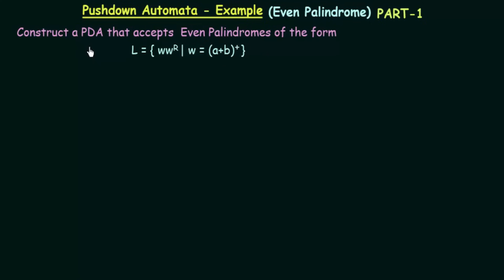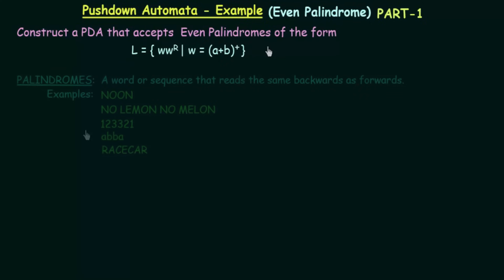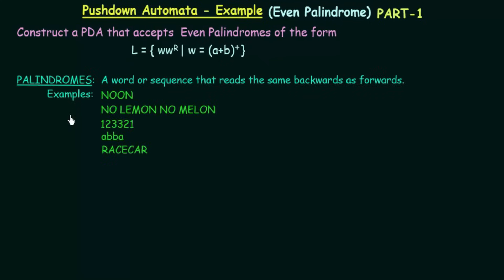Before we start designing, let us first understand what palindromes are. Palindromes are words or sequences that read the same backward as forward — they are the same whether you read them forwards or backwards.